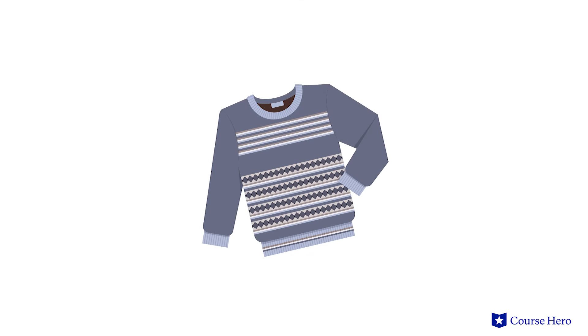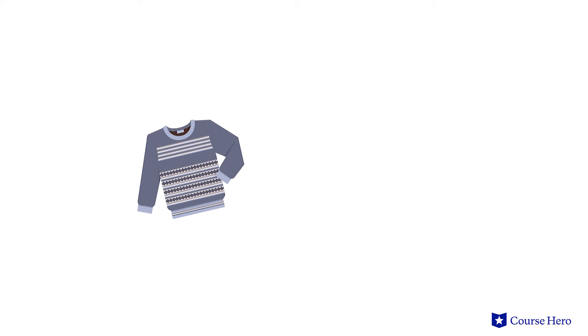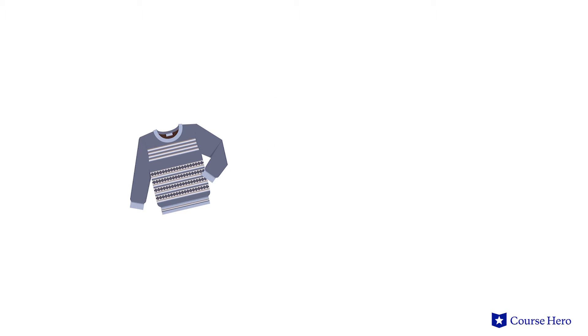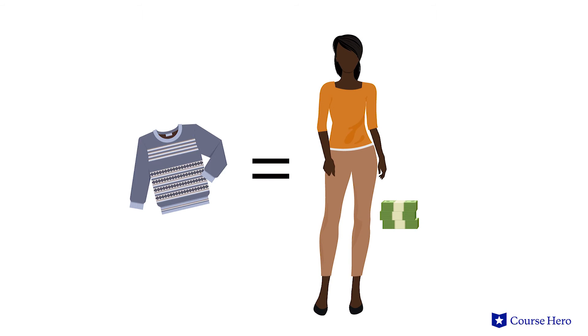To determine the number of workers a firm wants to hire, firms select the quantity of labor that is profit maximizing. In perfectly competitive labor markets, firms want to hire labor up to the point where the marginal revenue product of labor is equal to the wage paid to that unit of labor.